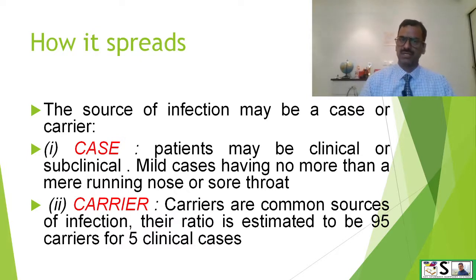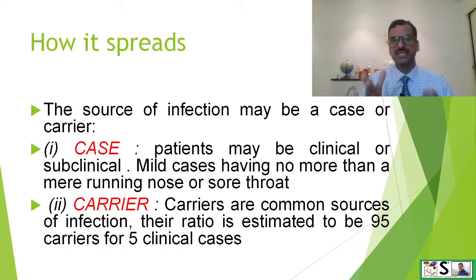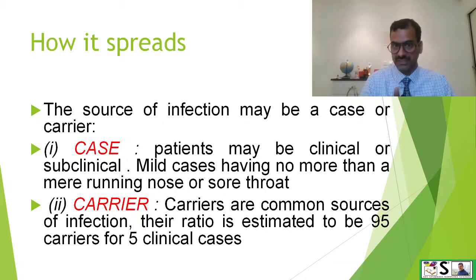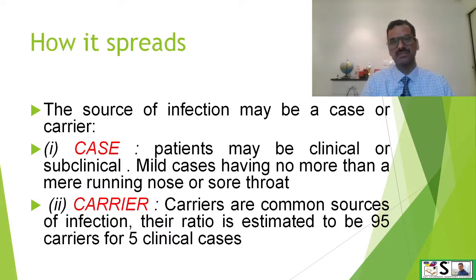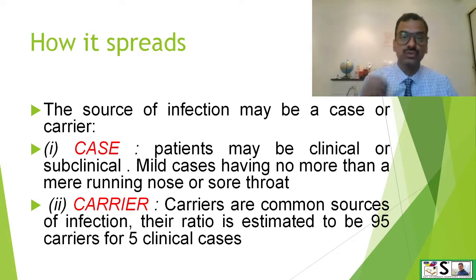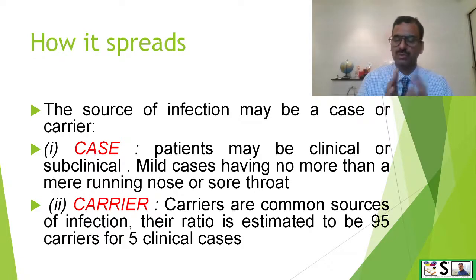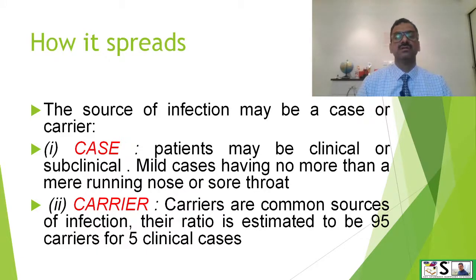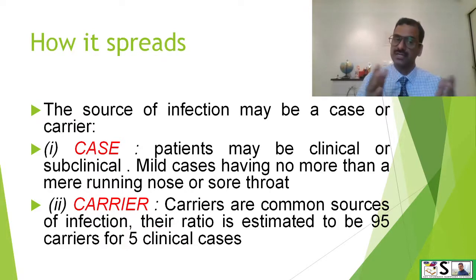How does it spread? The source of infection may be a case or a carrier. A case is a patient — the child who is suffering from diphtheria. The case may be clinical or subclinical. Clinical means the child is showing symptoms, and subclinical means the child is not showing any symptoms but is still suffering from diphtheria. Both can spread infection, and even a mild case with simple symptoms like a running nose can also spread infection.